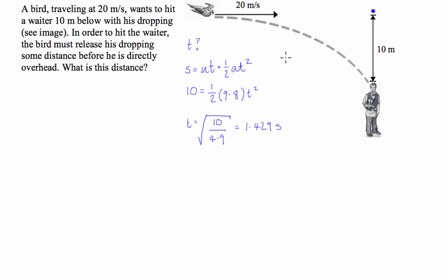So what we're going to do is, all we have to do then is figure out, well, how far is this dropping going to go in 1.429 seconds? So what we do, we're going to go s is equal to vt, which is equal to 20 times 1.429.